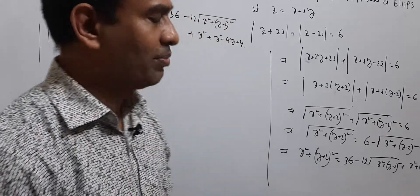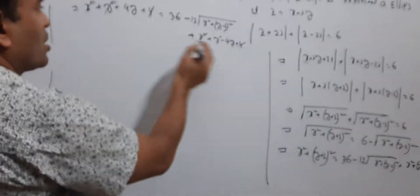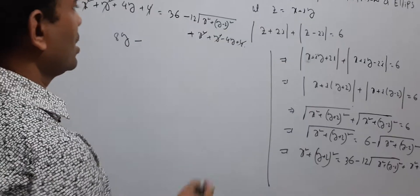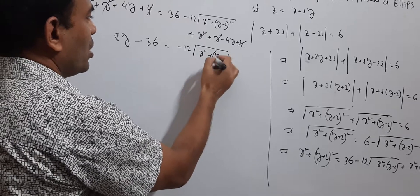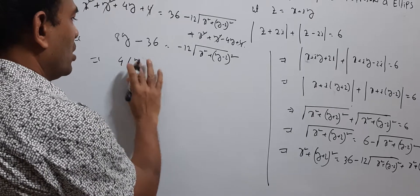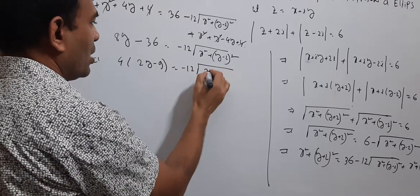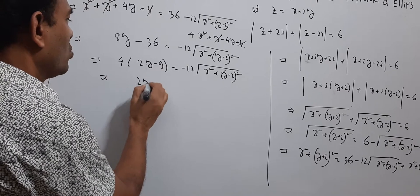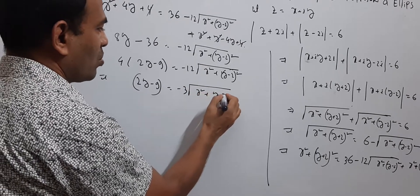Applying the formula — the 4s cancel with 4, x² cancels with x², y² cancels with y². Then 8y − 36 = −12·√(x² + (y−2)²). Simplifying: 2y − 9 = −3·√(x² + (y−2)²).